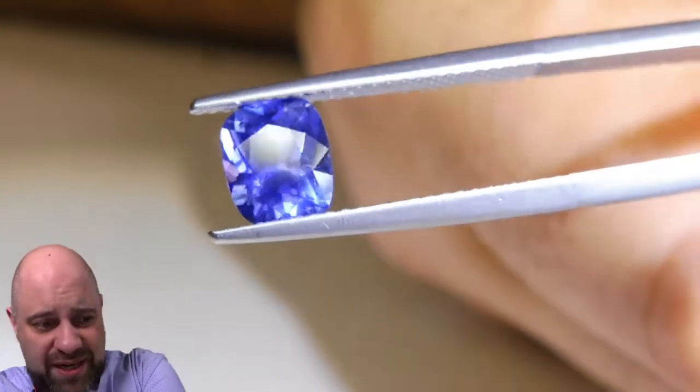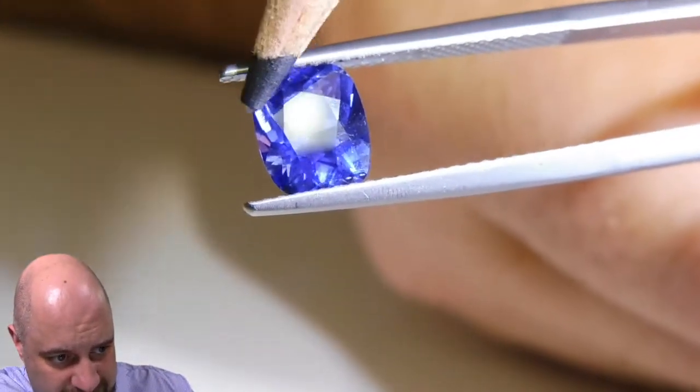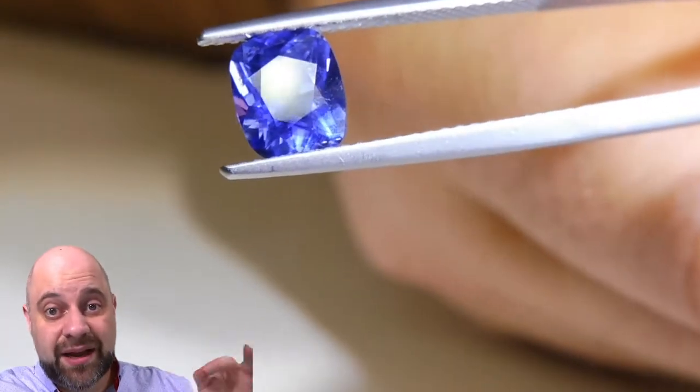I'm just barely getting it. Okay, so right there, top corner, you can see a little tiny bit of a reflection. And when I'm saying minor eye visible, I mean, it is minor.